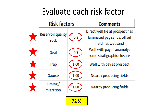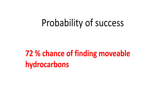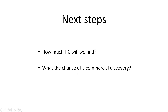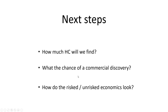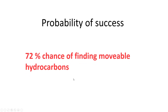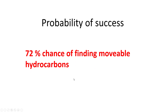The overall chance of success comes out to 72%. Some next steps you could take: determine how much oil, gas, or hydrocarbons we'll find using different techniques, assess the chance of a commercial discovery, and look at the economics both risked and unrisked. But right now, the result of this prospect risking is a 72% chance of finding movable hydrocarbons. Hope you find that interesting and informative — please call me if you have any questions.